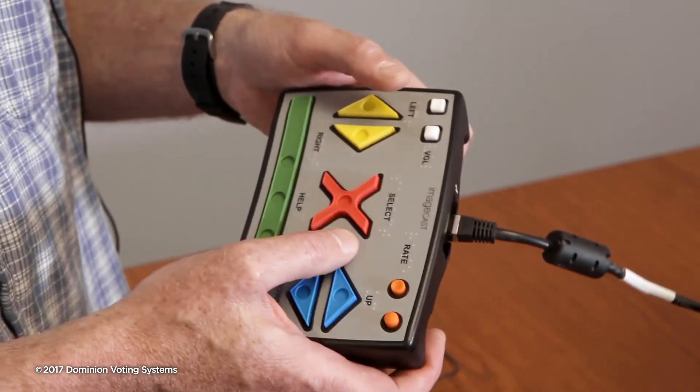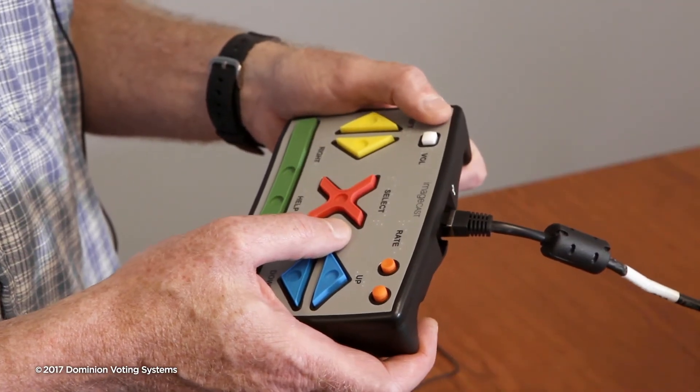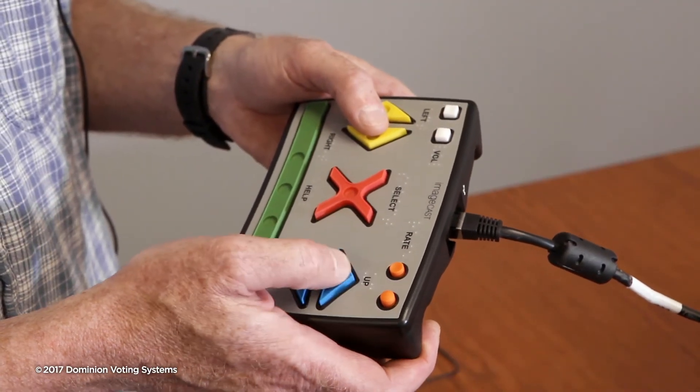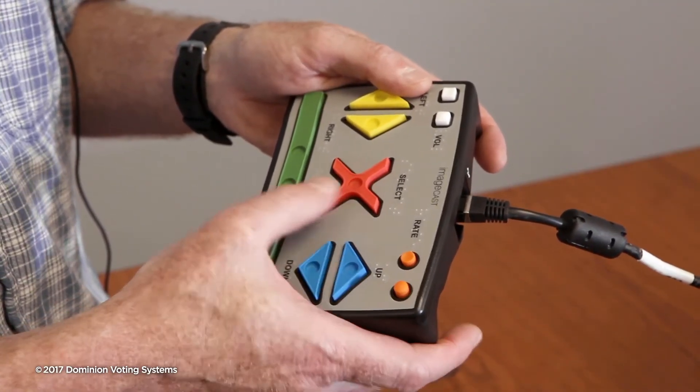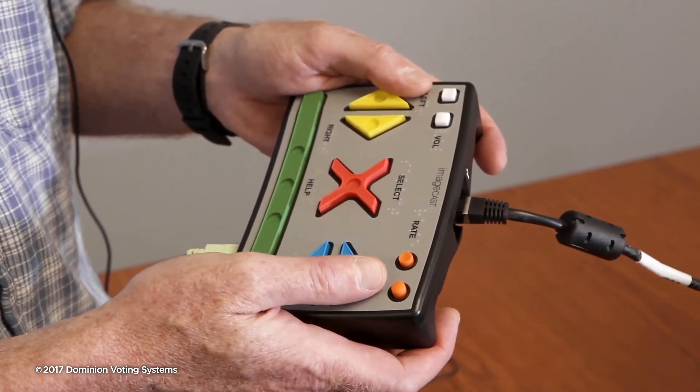Volume buttons at the top left allow adjustments to the volume level. The Speech Rate button at the top right allows adjustments for the voice speed. Press the green help bar at any time to repeat instructions.